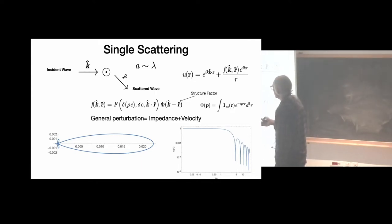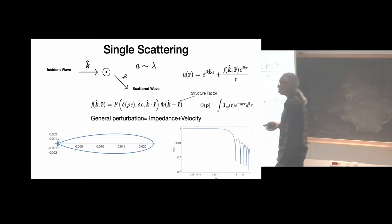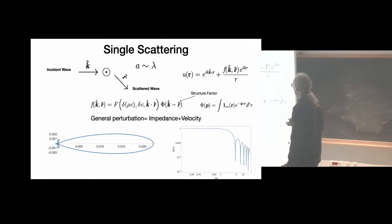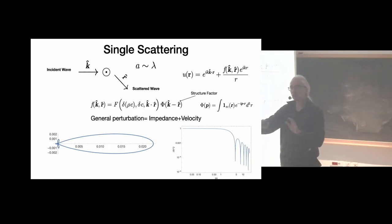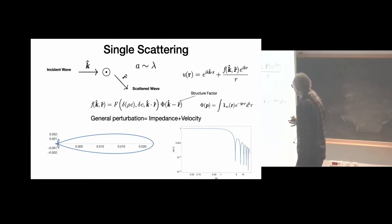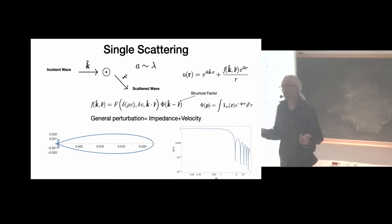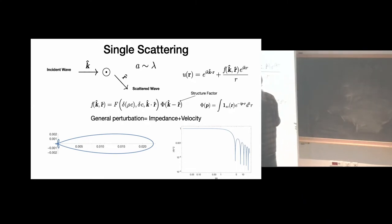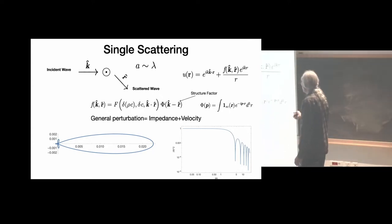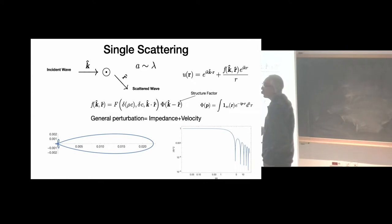The Born/Rayleigh-Gans approximation gives us the original perturbation function from before, plus an additional factor called the structure factor. The structure factor is the Fourier transform of the characteristic function of the scatterer — a function equal to one inside the scatterer and zero outside. It describes the shape of the object. I'm showing what it looks like for a sphere: the modulus squared as a function of the size parameter p times a (wave number times sphere radius).